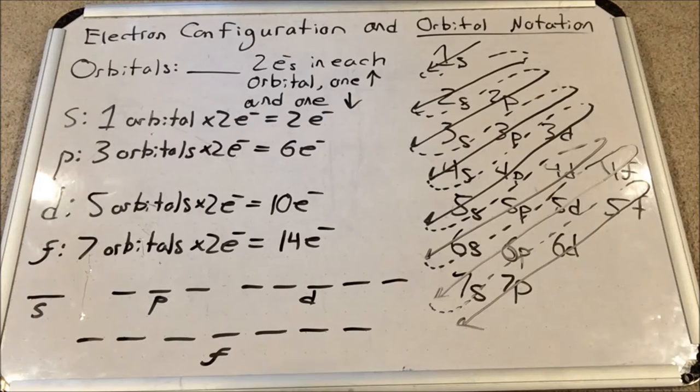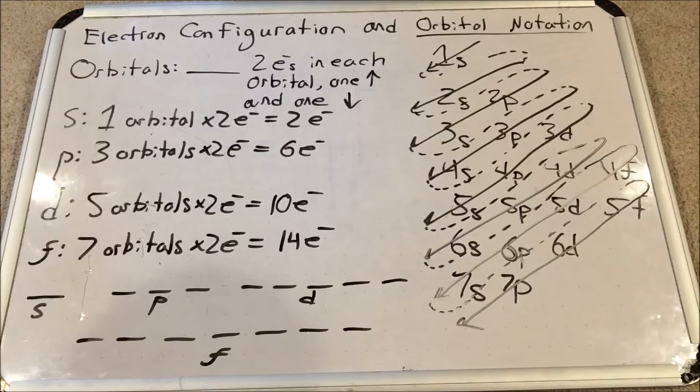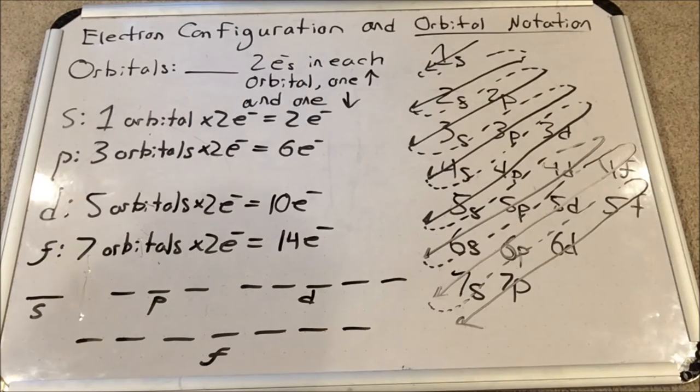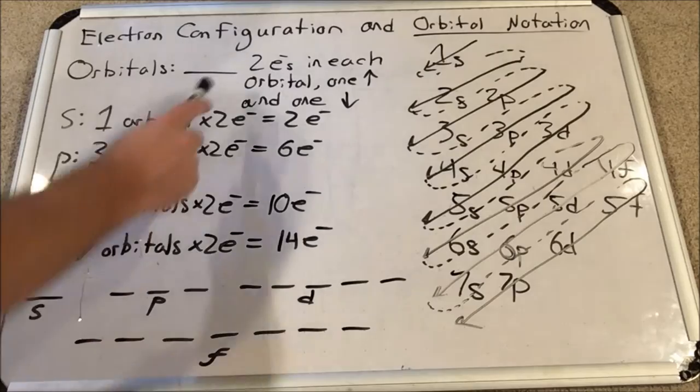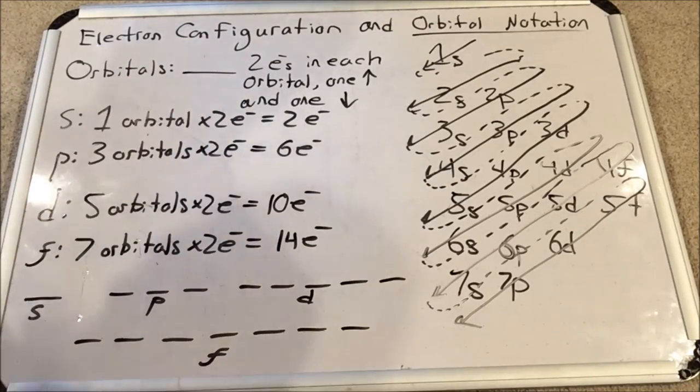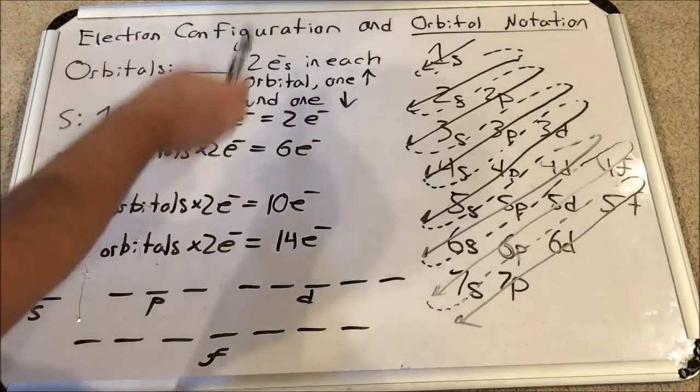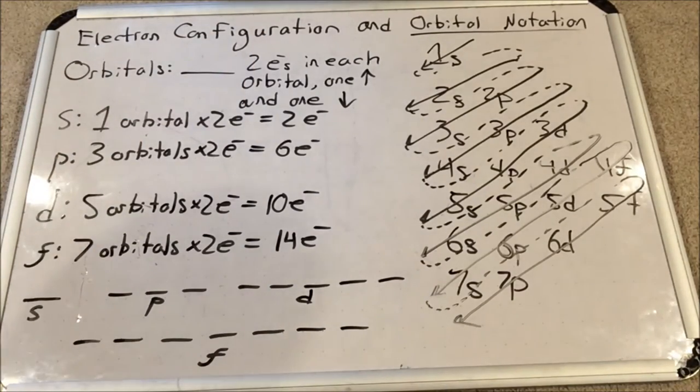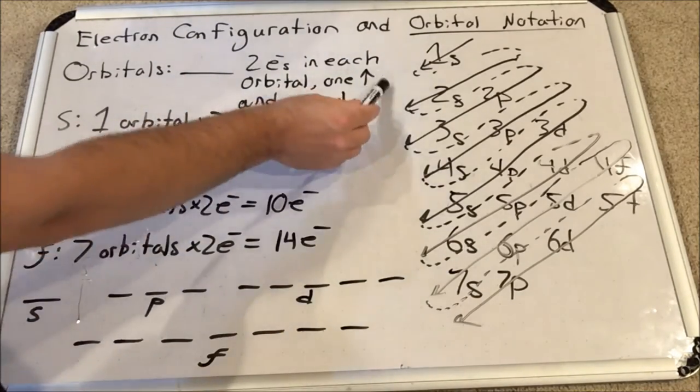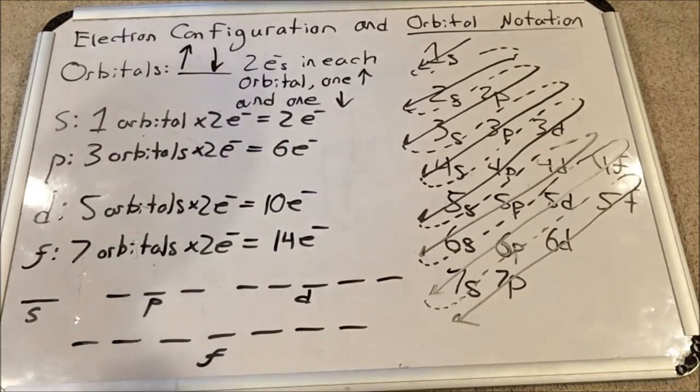So an orbital is really an address for a pair of electrons, and it's symbolized with a line. Two electrons can fit in each orbital, one with spin up and one with spin down, and we actually notate them with arrows. The spin up arrow is always listed first and the spin down arrow is always listed last.